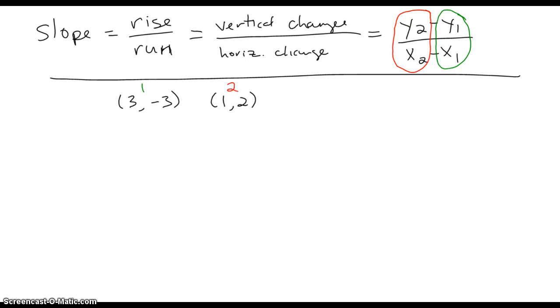So let's figure out the slope of the line between these two points. We're going to put our y's on top, so we're going to figure out the y2 is 2.